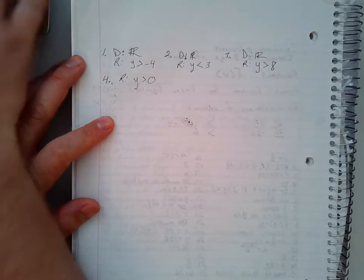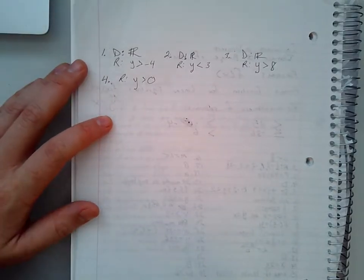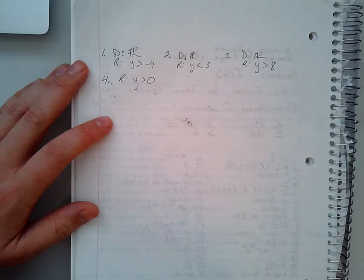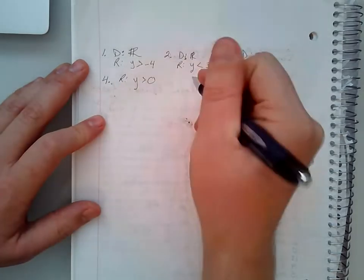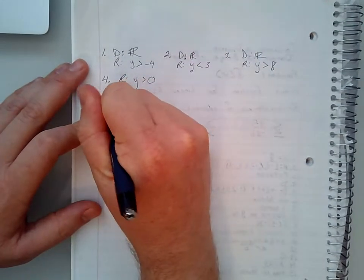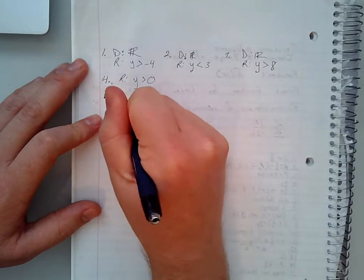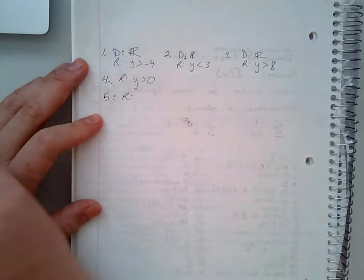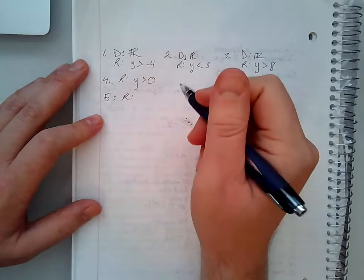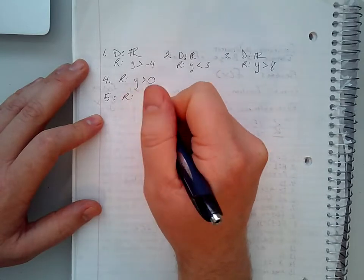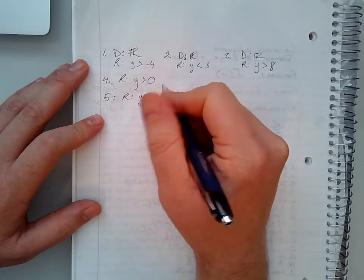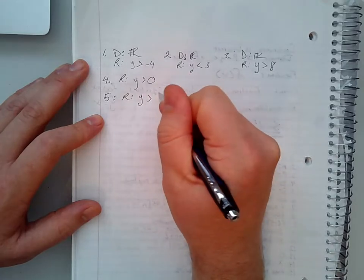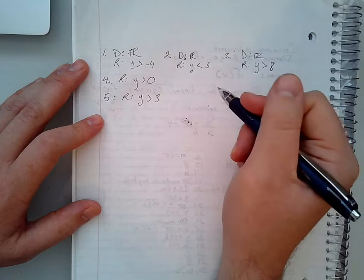Number five: the graph of y equals 2 to the power of x plus 3 is shown. What is the range? You can look at the equation or the graph. Because our 'a' is positive, y is greater than three, because that is where our asymptote is — that is our 'c' value.